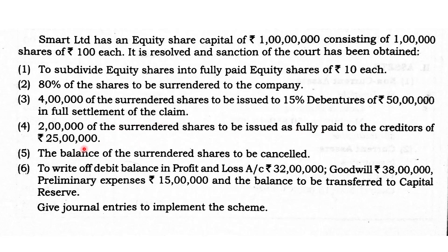Creditors of Rs. 25 lakhs are to be settled with 2 lakh surrendered shares. The balance of the surrendered shares is to be cancelled. Next, write off the debit balance in the Profit and Loss Account of Rs. 32 lakhs, goodwill of Rs. 38 lakhs — goodwill is written off because the company is undergoing financial restructuring — and preliminary expenses of Rs. 15 lakhs. Any remaining balance is to be transferred to capital reserve.